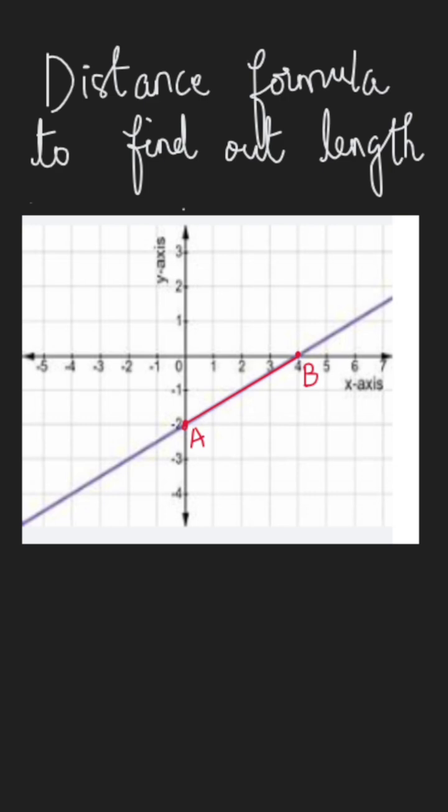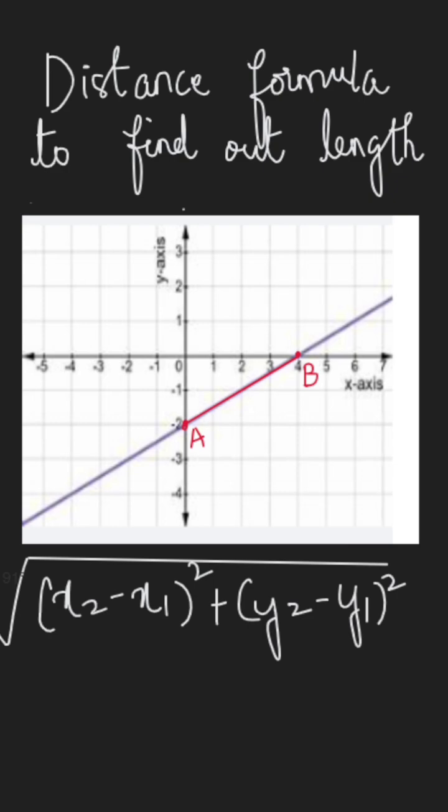Now we will try to find that using the distance formula. The distance formula is given by x2 minus x1 whole square plus y2 minus y1 whole square, and this entire thing should be under the square root.